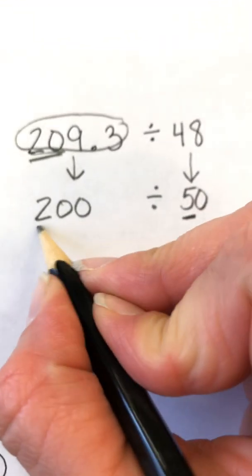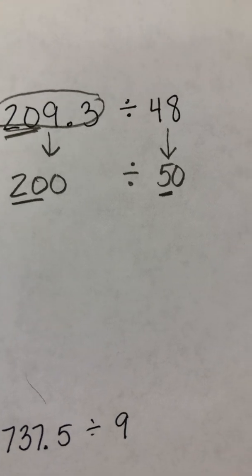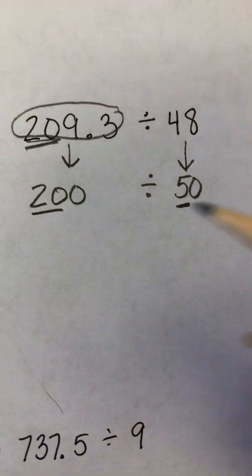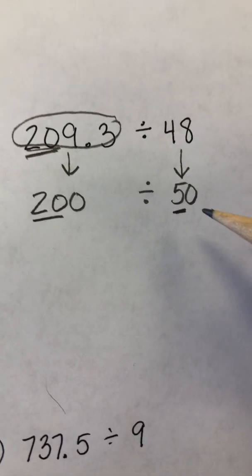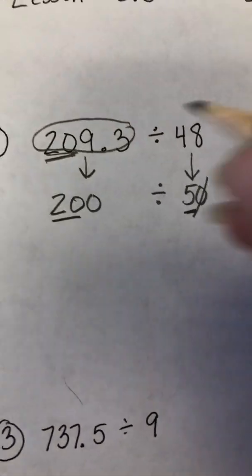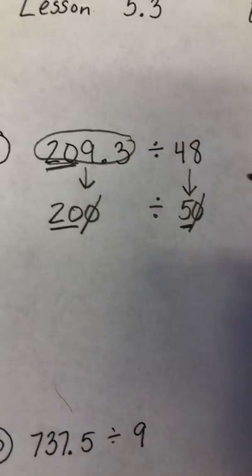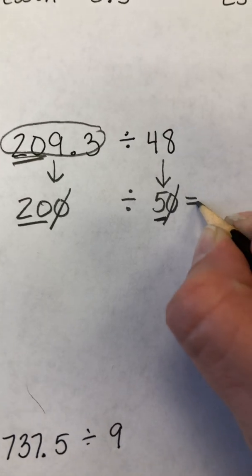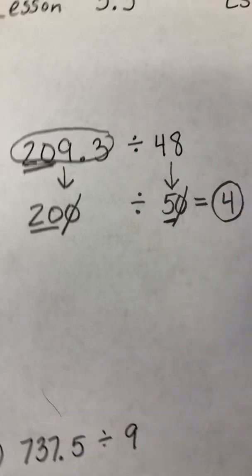Now that leaves me with 200 divided by 50 because I'm looking for an estimate, so it doesn't have to be exact. I can see I have an extra zero on either side, so I can actually eliminate that to make my life easier because they're going to cancel each other out. This leaves me with 20 divided by 5. And that's a basic fact. 20 divided by 5 is 4. So my final answer is 4.